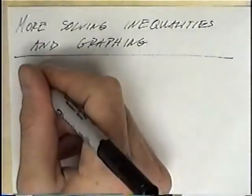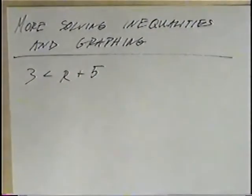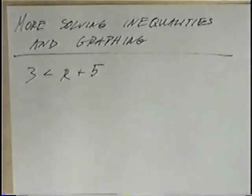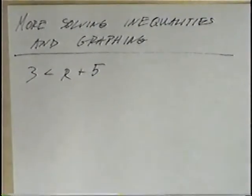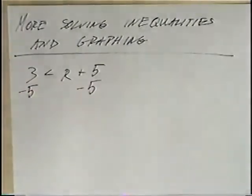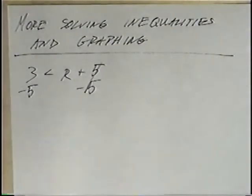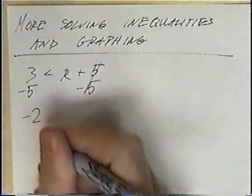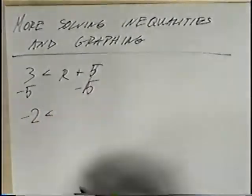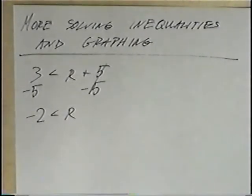The first question today is 3 is less than r plus 5. Before we graph the inequality, we have to isolate or get r by itself, so we have to get rid of the positive 5. The opposite of adding 5 would be subtracting 5, and we will do that to both sides of the inequality. The 5s cancel, and 3 minus 5 would be negative 2. We have opposite signs so we subtract them — 5 is bigger so we keep it negative. The answer to the inequality is negative 2 is less than r.